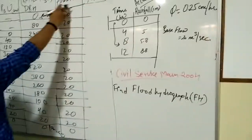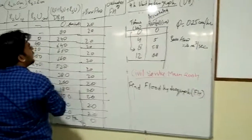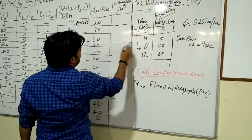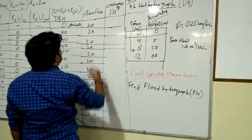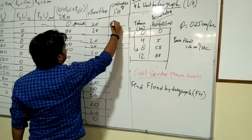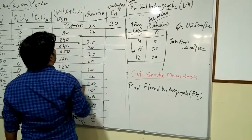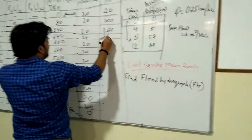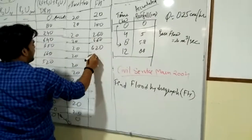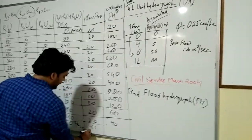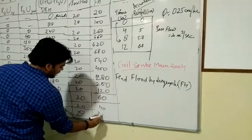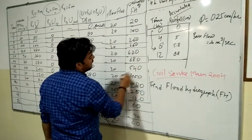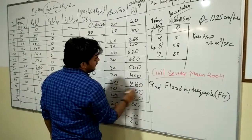The base flow gives you the ordinates of the flood hydrograph: 20, 100, 260, 660, 620, 680, and the last value is 20 cubic meters per second. This is how we will evaluate the flood hydrograph.